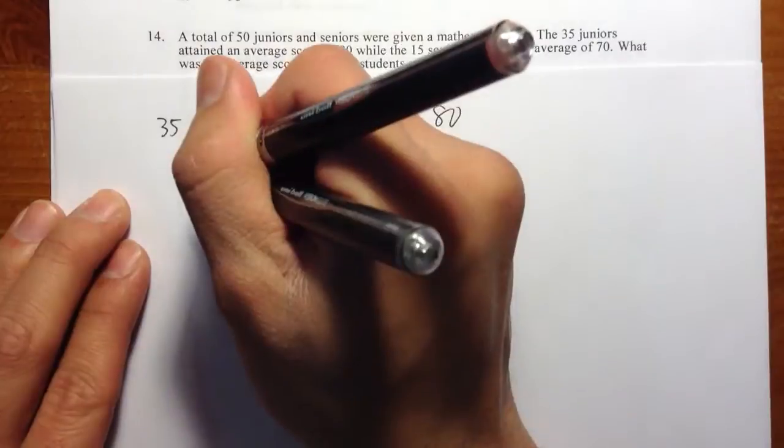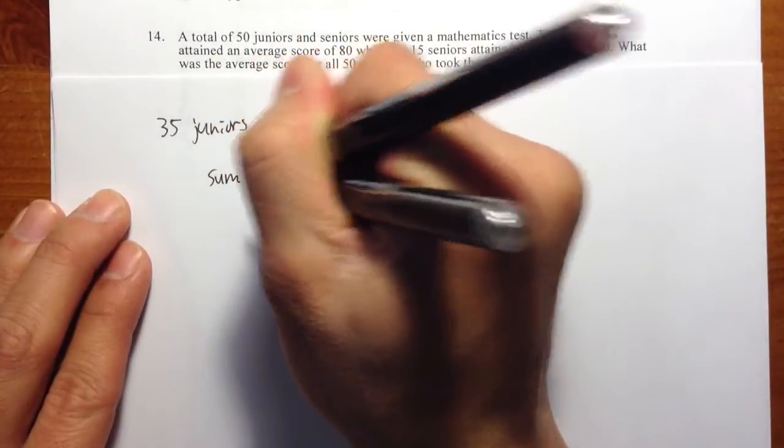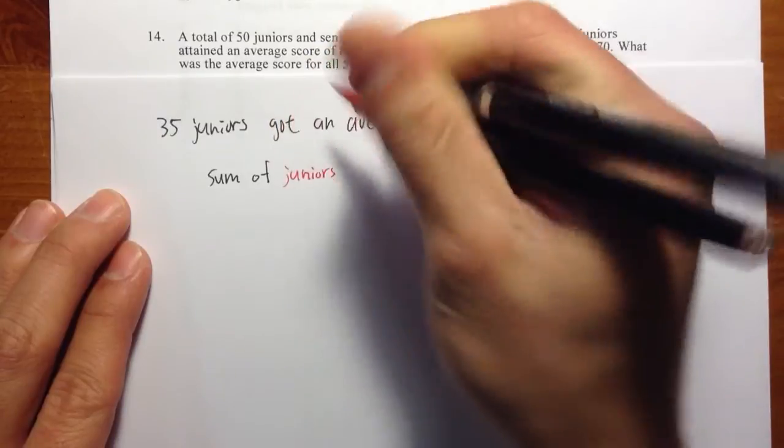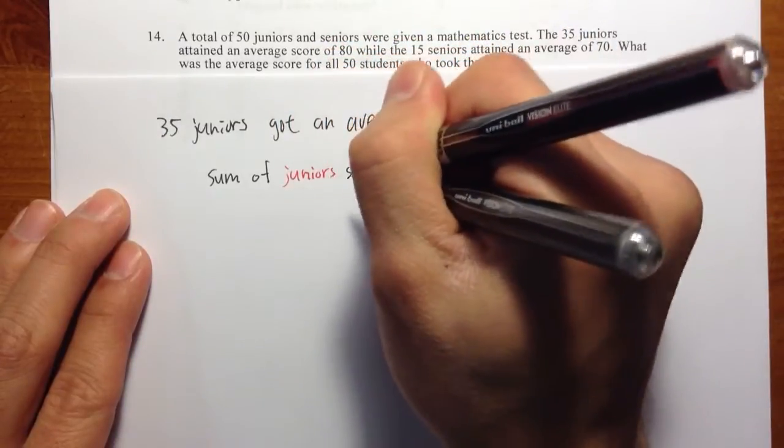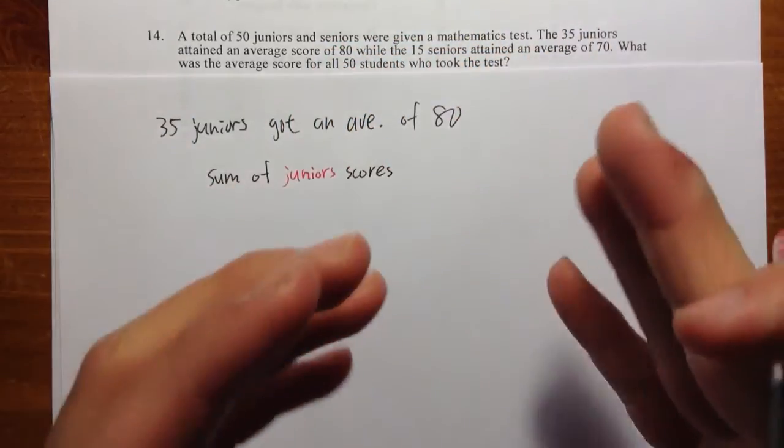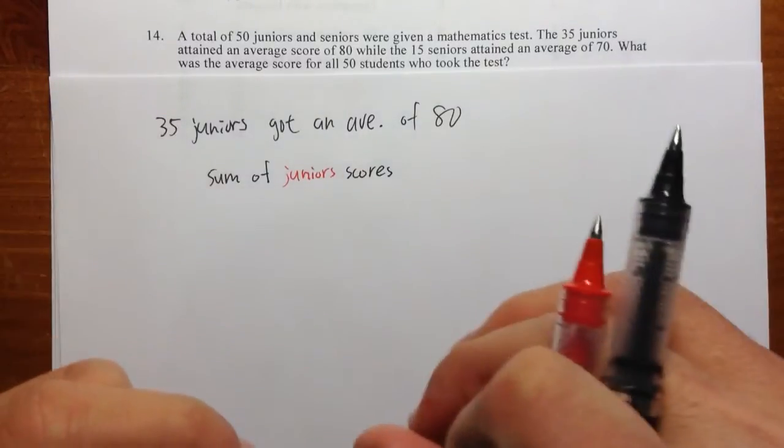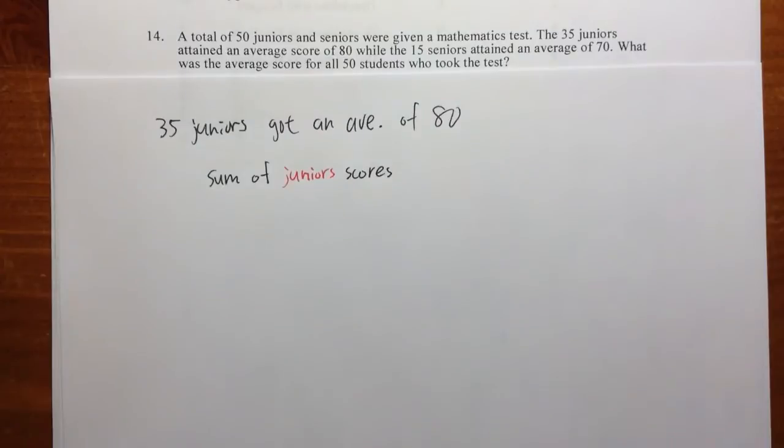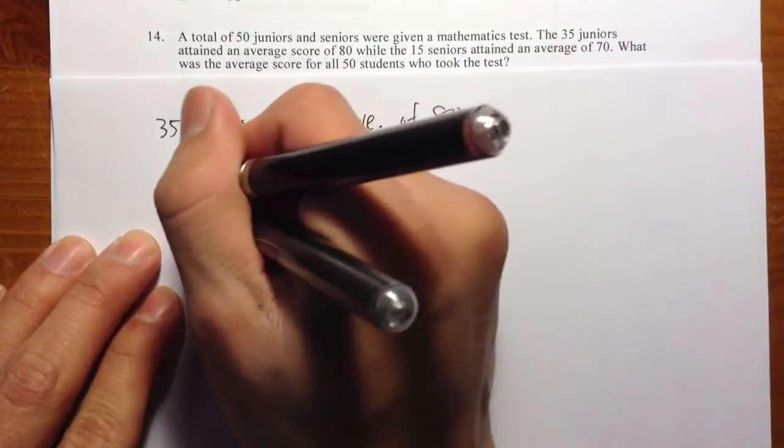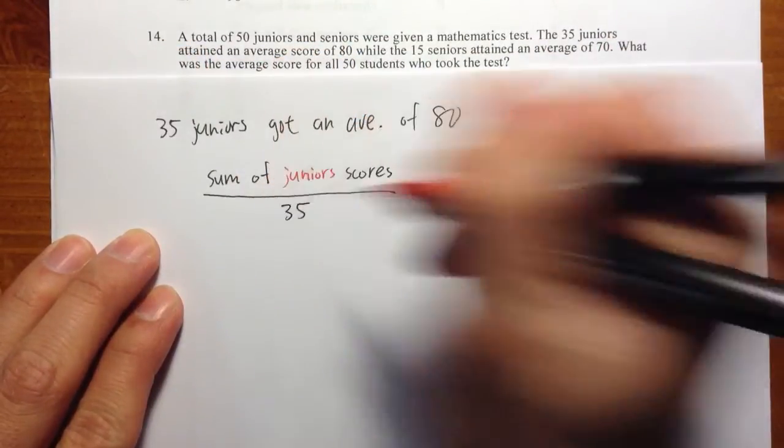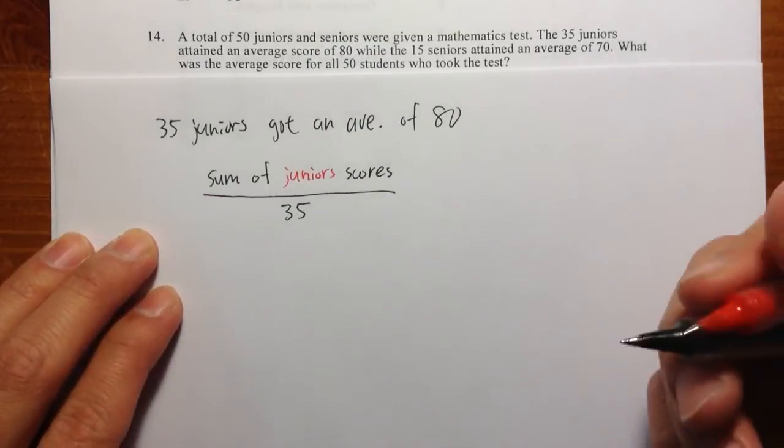So we have 35 juniors. And they got an average of 80. So that means the sum of the juniors' scores. So if you take a look of all the 35 tests from these juniors and then add them up, that's what I mean by the sum of juniors' test scores.